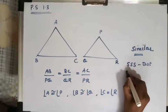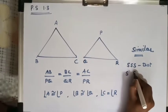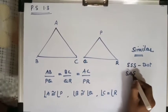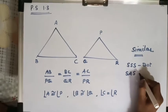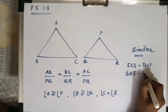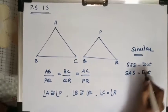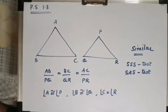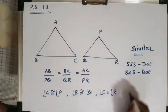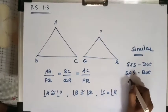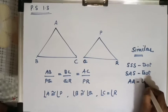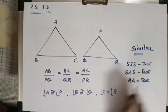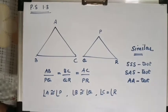If two sides are in proportion and one included angle is congruent, then the triangles are similar by the SAS test. And if only two angles are congruent, then the triangles are similar by the AA test of similarity.